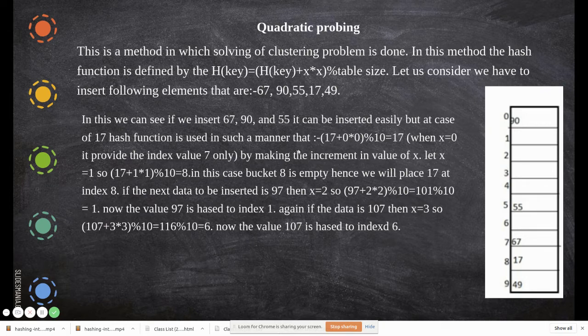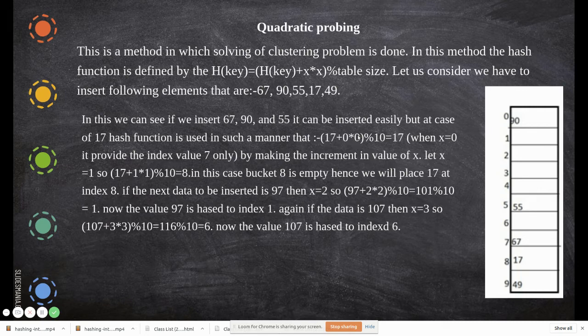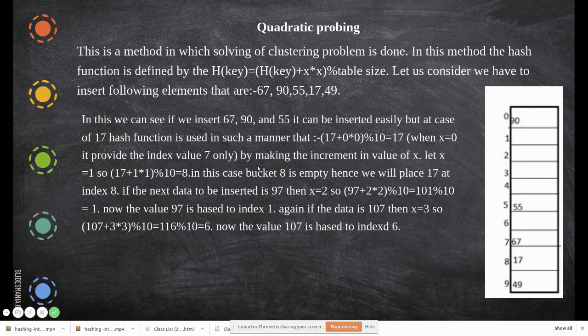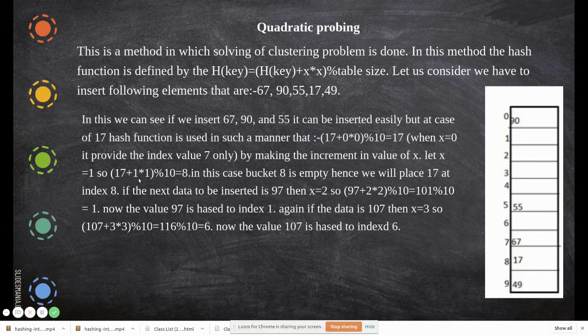For that, we'll use quadratic probing. The first time it finds its place, but the next data that generates the same hashing requires this technique. So 0×0 again gives 17 at index 7. Let's make x equal to 1 and increment. So (17+1×1) mod 10.